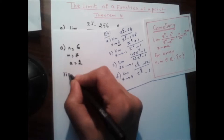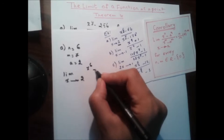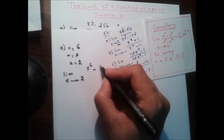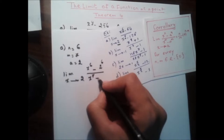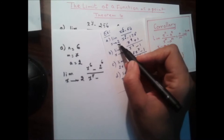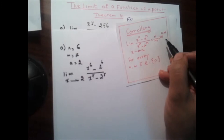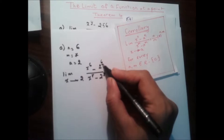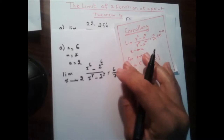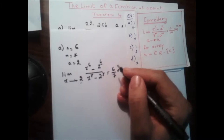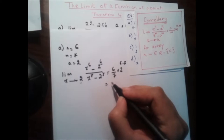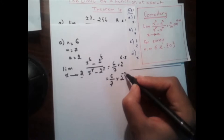Now we can write the form of the corollary. The limit as x tends to 2 of (x^6 minus 64) — where 64 is 2^6 — over (x^7 minus 128) — where 128 is 2^7. This is equal to n over m times a to the power of n minus m, which gives 6 over 7 times 2 to the power of 6 minus 7, so 6 over 7 times 2 to the power of negative 1.